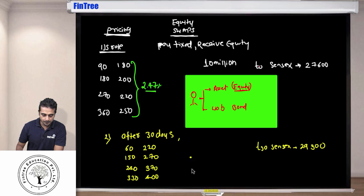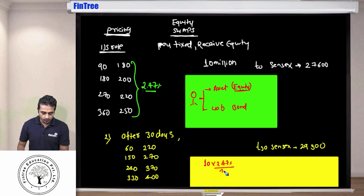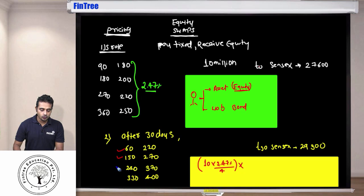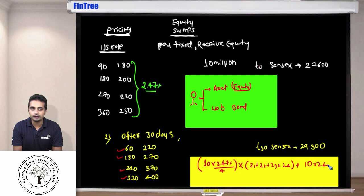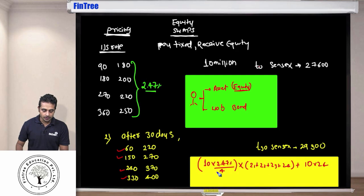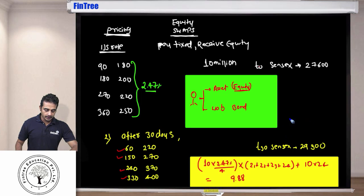For the fixed coupon bond, we have four coupon payments. Each coupon equals 10 million times 2.47% divided by 4. The coupons fall at 60, 150, 240, and 330 days. We compute new discount factors Z1, Z2, Z3, Z4 using the revised rates, multiply each coupon by its discount factor, then add 10 million discounted for four periods (10 million times Z4). The total liability comes to 9.88 million.